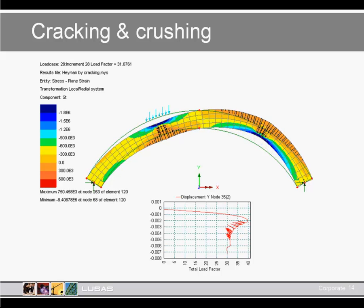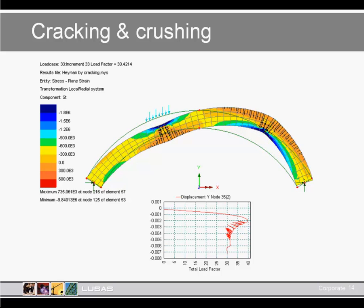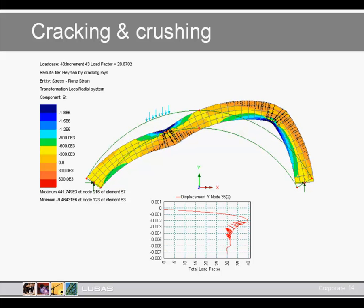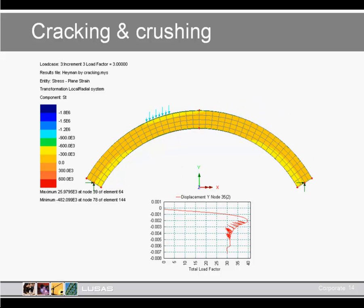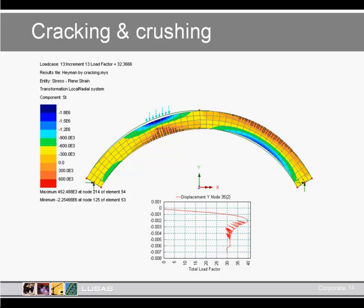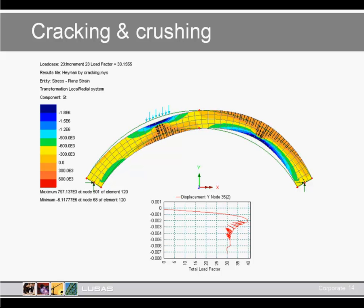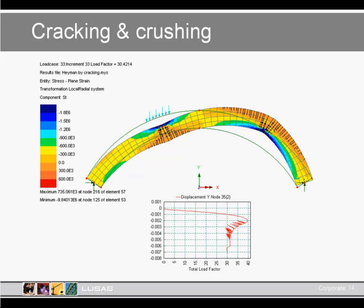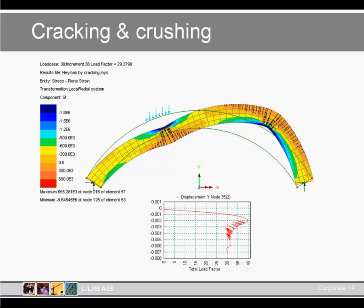Typical displacements in masonry structures tend to be small, so you wouldn't normally see large movements. But as the structure develops hinges you can get quite gross deflections, which hopefully will not happen in reality — but they are possible.